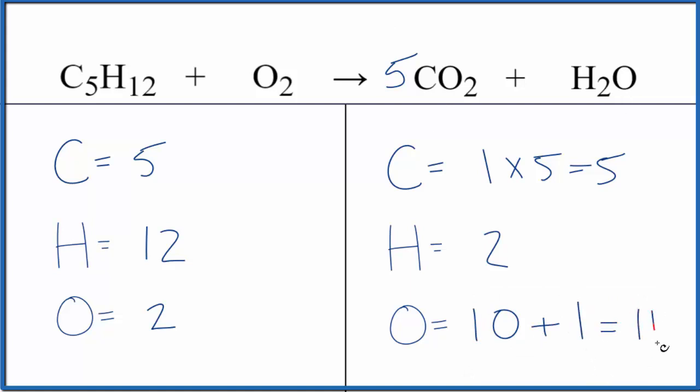Let's put a six in front of the H2O. Two times six gives us twelve - the hydrogens are balanced. Again we need to update those oxygens: five times two is ten, plus six times one is six, giving us sixteen oxygen atoms.